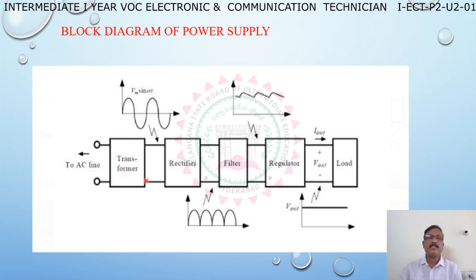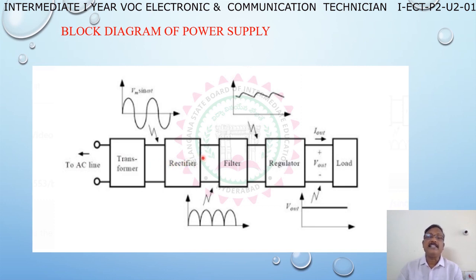If we have a transformer, we can reduce the voltage. The transformer takes AC input and gives AC output at a reduced voltage. We then rectify this transformer output. The rectifier input is AC and its output is DC. The rectifier output will contain a little ripple of the AC voltage.